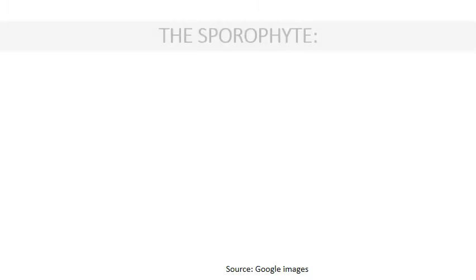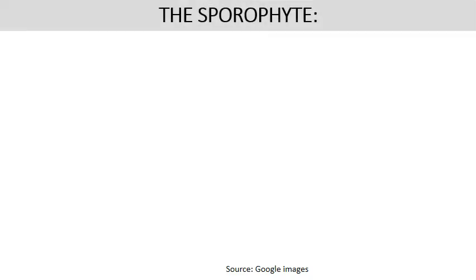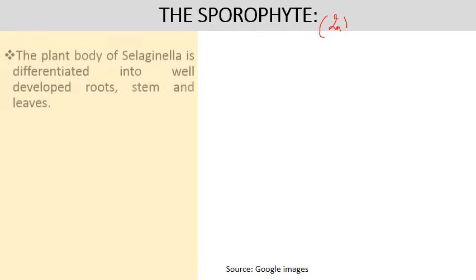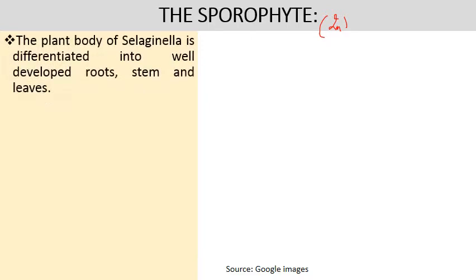Regarding external body features: the main plant body in Selaginella is the sporophyte — it is diploid in nature and shows well-developed root, stem, and leaves. The plant body is differentiated into well-developed root, stem, and leaves.